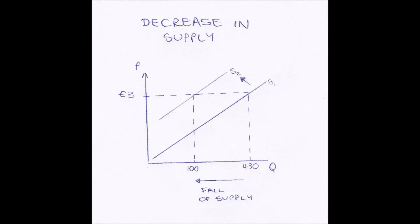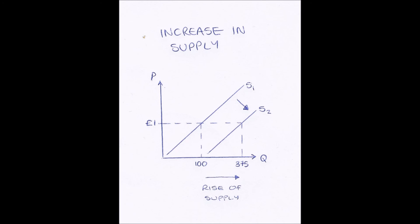So if supply does decrease — say because of an increase in the price of leather — our curve shifts upwards, or shifts to the left. If the price of our good is three pounds and we read across to our original supply curve S1 and read down, our quantity supplied is 430 units. But then, following an increase in the price of leather, supply drops as businesses exit the market, so the curve shifts to S2. Now reading across at three pounds and down, our quantity supplied is only 100 units — a fall in the supply of the good.